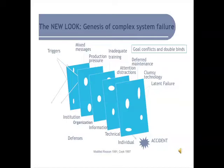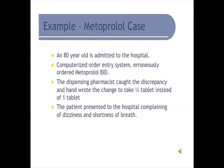At the institutional level there may be mixed messages — pushing safety as a concern but also pressure for production. Within the organization there might be inadequate training, attention distractions, maintenance not happening, and technology becoming clumsy. There are different triggers that come up against these barriers, and goal conflicts between institutions and between items pulling at you from both ends. What Richard Cook and Dave Woods expanded upon is that we have defenses, but sometimes all the holes in the system align up, and errors get through.